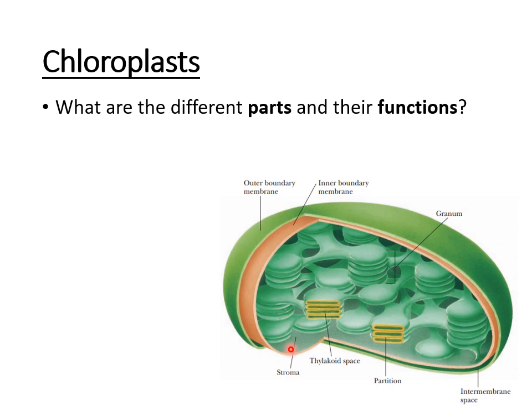The other term I want you to circle, star, and highlight in your notes is the stroma. The stroma is the site of the Calvin cycle or the dark reactions, so light reactions are in the thylakoid discs and the stroma is where the Calvin cycle will occur. The stroma is basically the equivalent of the mitochondrial matrix, and it is where you'll have the production of carbohydrate or sugar during photosynthesis — where carbon dioxide gets fixed into carbohydrate.